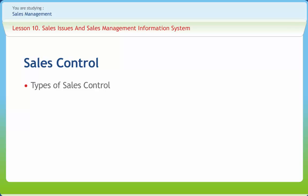The steps in designing a sales control system include objective setting, designing different control levels, designing a reporting system and a feedback system, deciding tools and techniques of control, variance analysis, and reasons thereof.